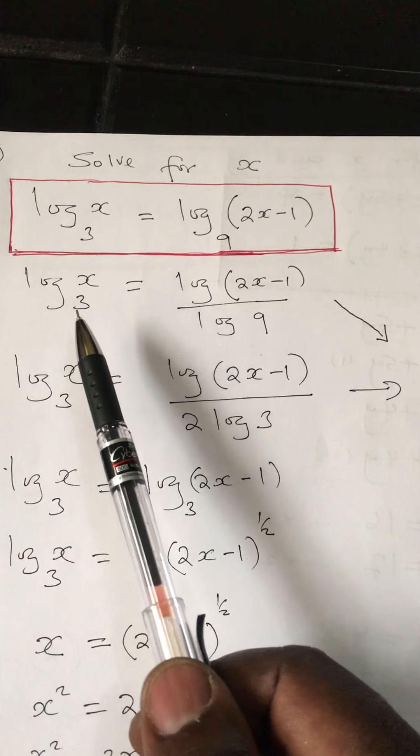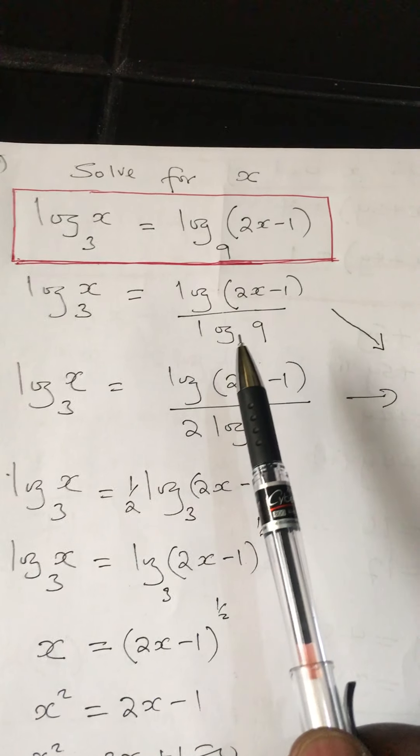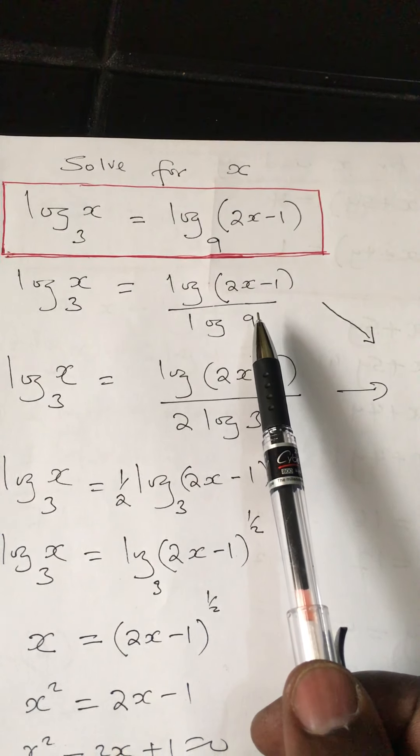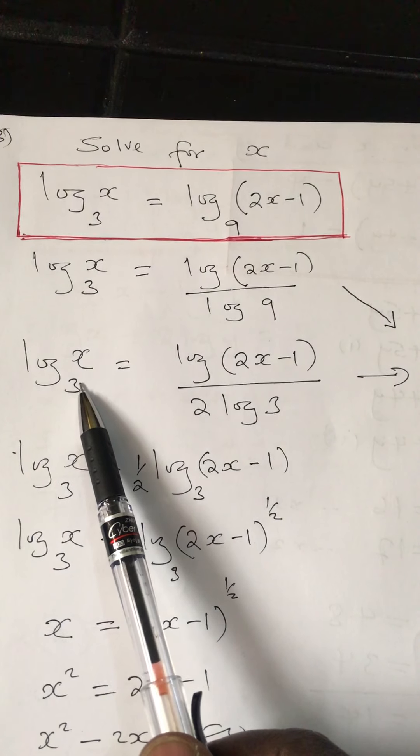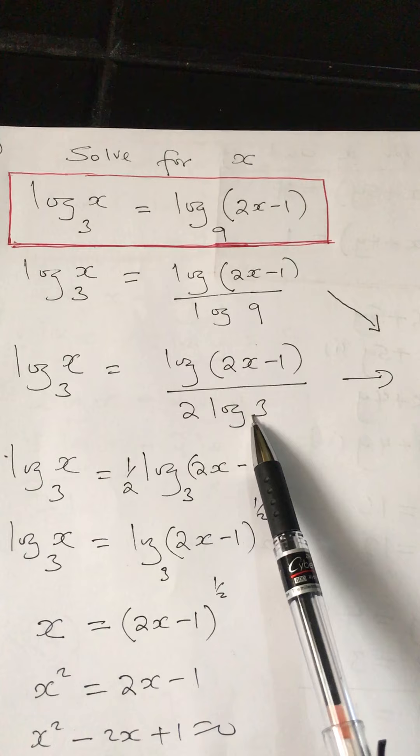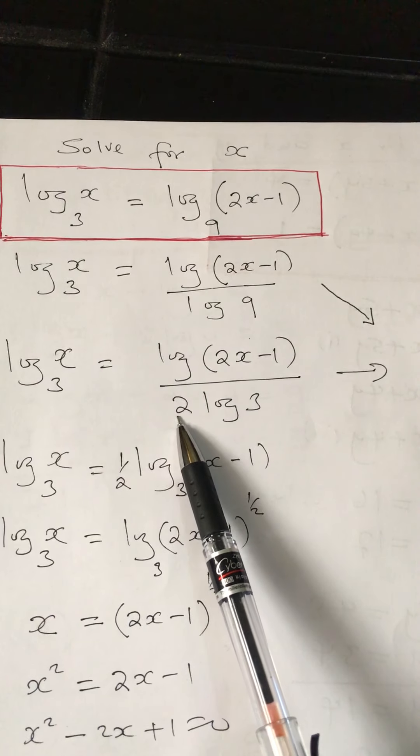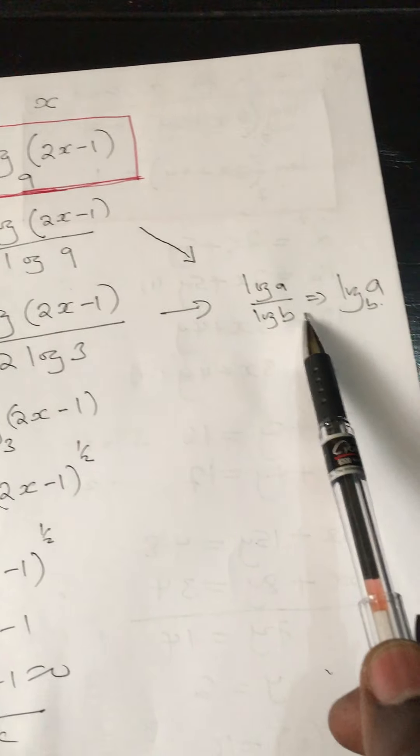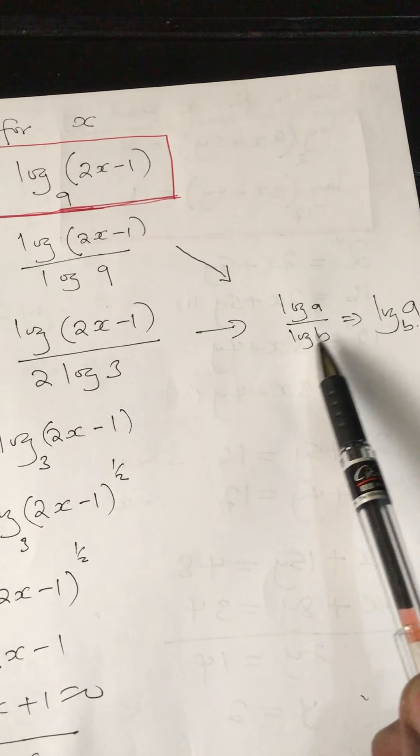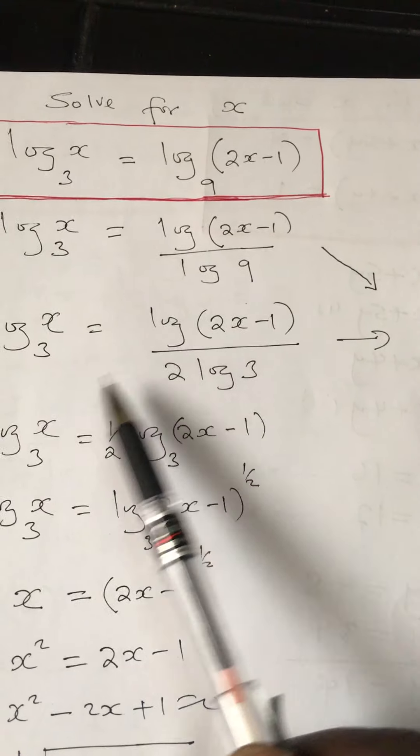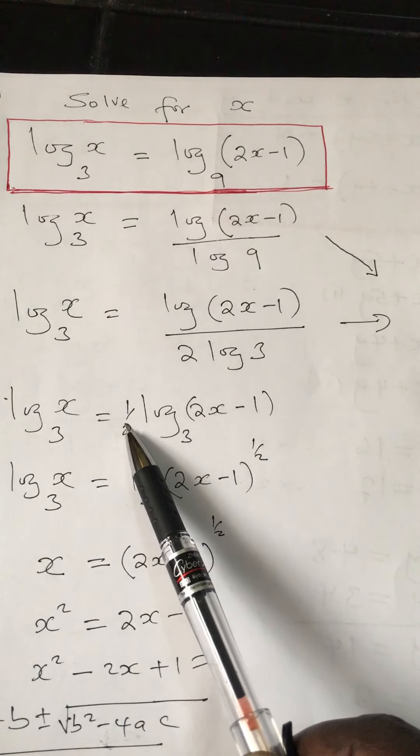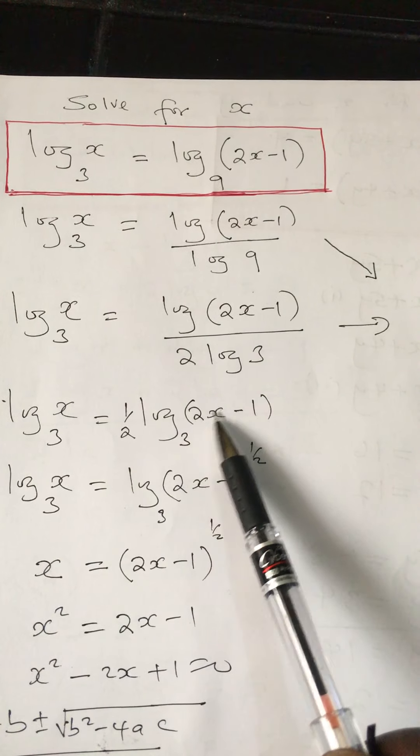This statement can be written as log(2x-1) over log 9, which equals log x base 3. Looking at the denominator, there is log 9, which is the same as log 3 squared, and that can be written as 2 log 3. Simplifying this part gives us log(2x-1) over 2 log 3. With this law, I want to rewrite this from this form to that form, which becomes a half log(2x-1) base 3.